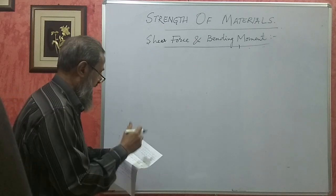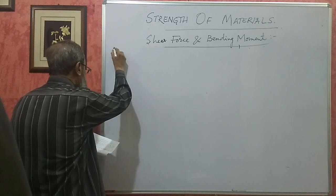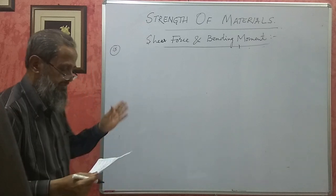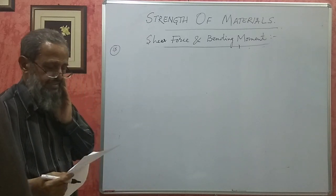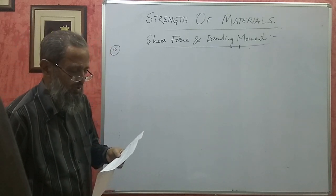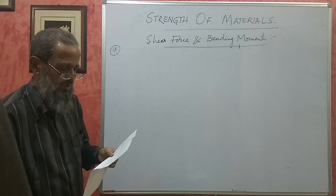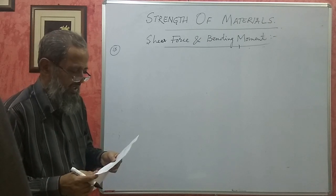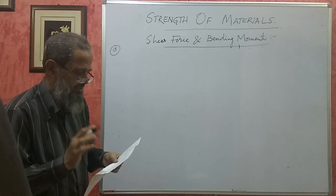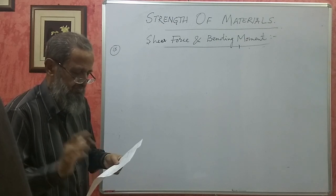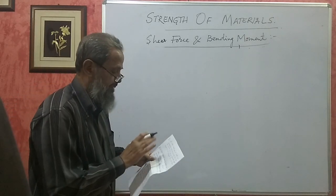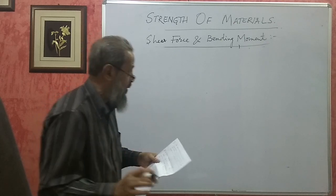We will do a few problems here. I have selected from your question bank problem number 15. A simply supported beam of length 6 meters carries point loads of 2 kilonewton, 4 kilonewton and 5 kilonewton at distances of 1 meter, 3 meters and 4 meters from the left support respectively. Draw SF and BM diagrams for the beam. This is a problem having only point loads.